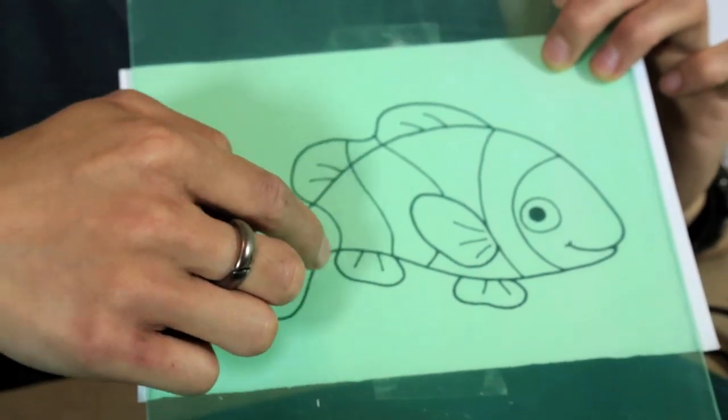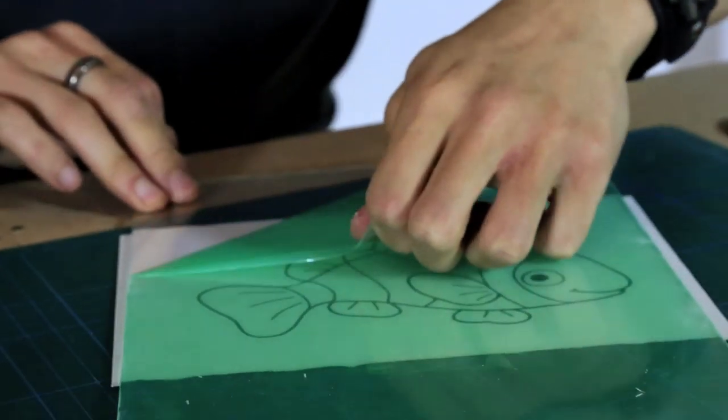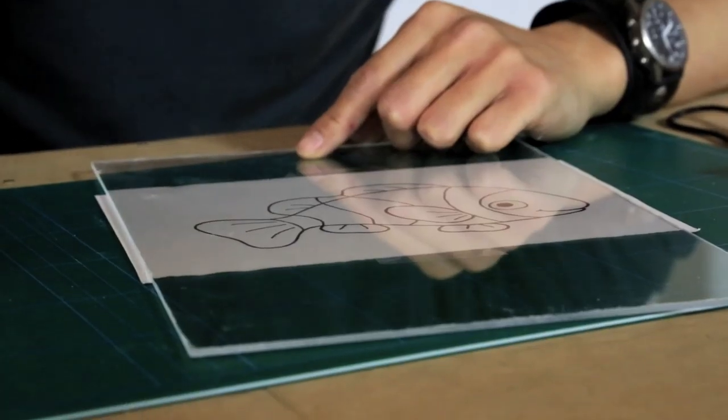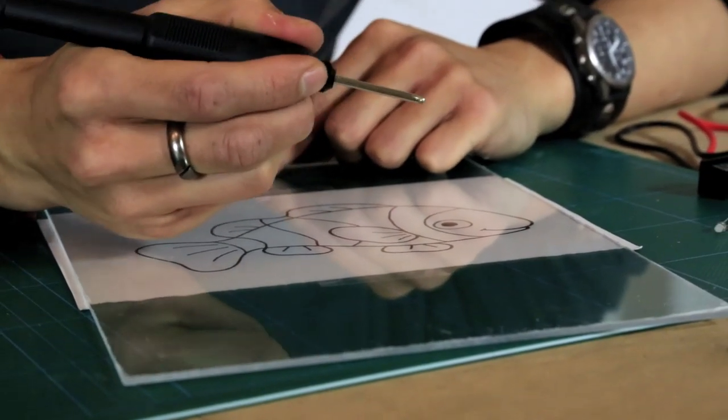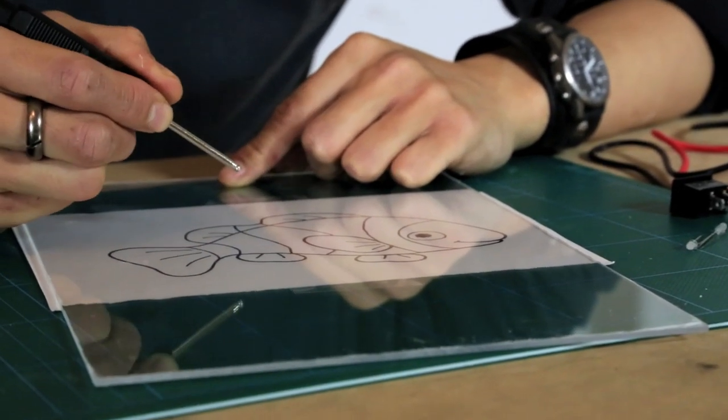So we're going to be engraving on this side of the plastic. So we've removed the protective coating. So with a mini grinder and an engraving bit, we're going to trace the outline of the image onto the plastic. And remember when using power tools, you always should wear eye protection.